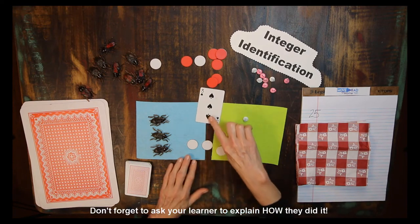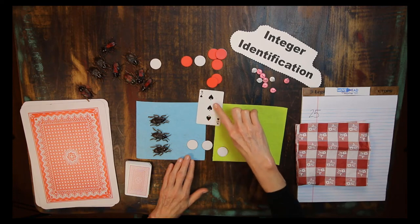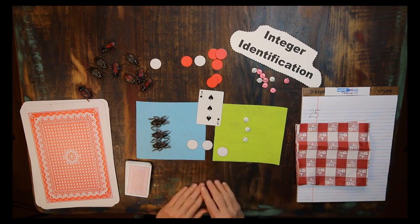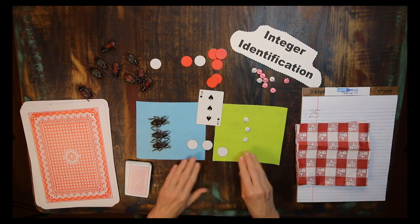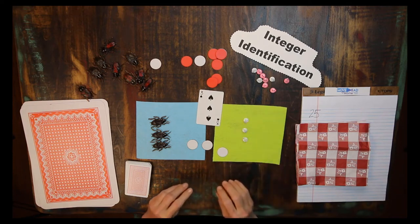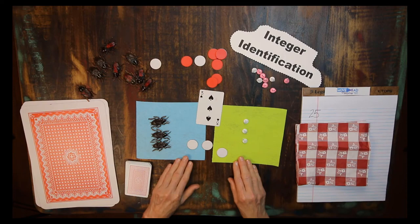I know this represents positive three. One, two, three. Practice this. Identify those integers, represent them concretely, and you'll be ready to move ahead with integer combination.